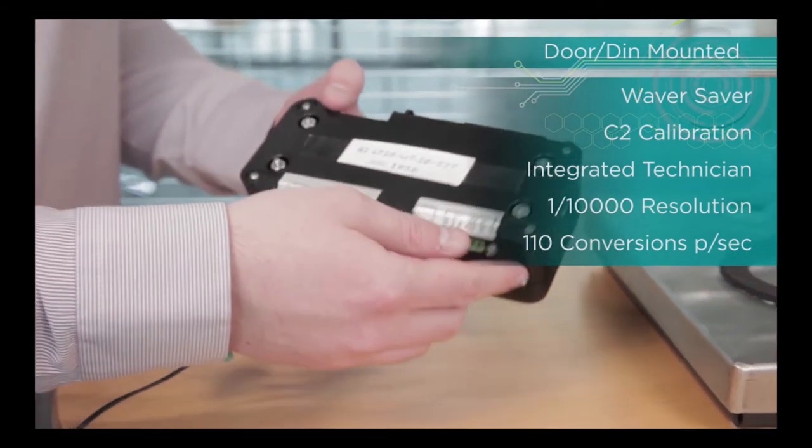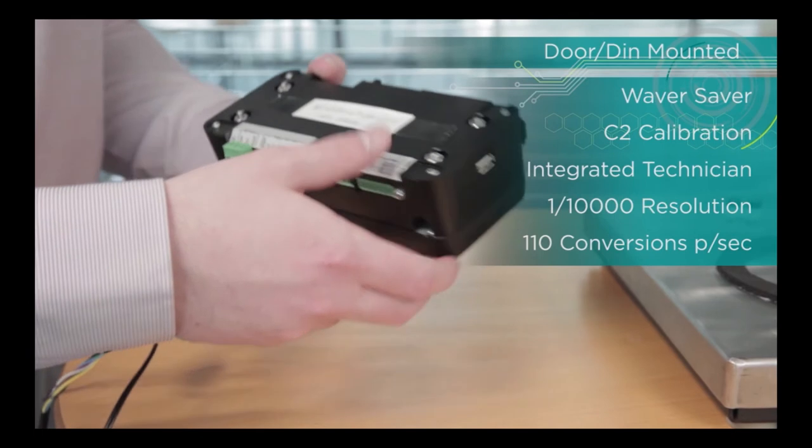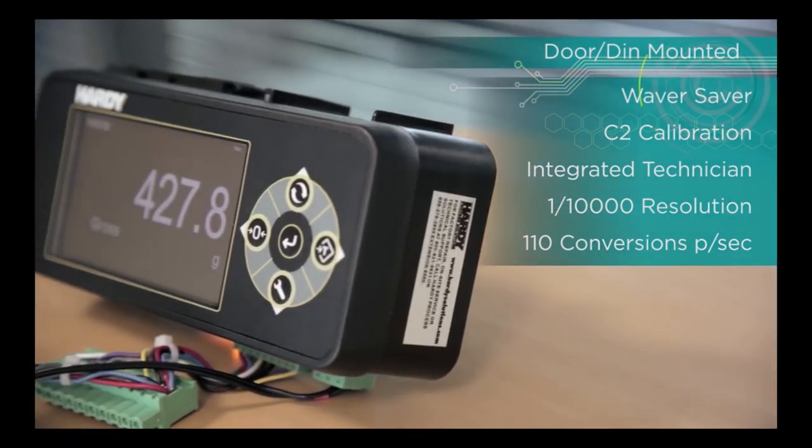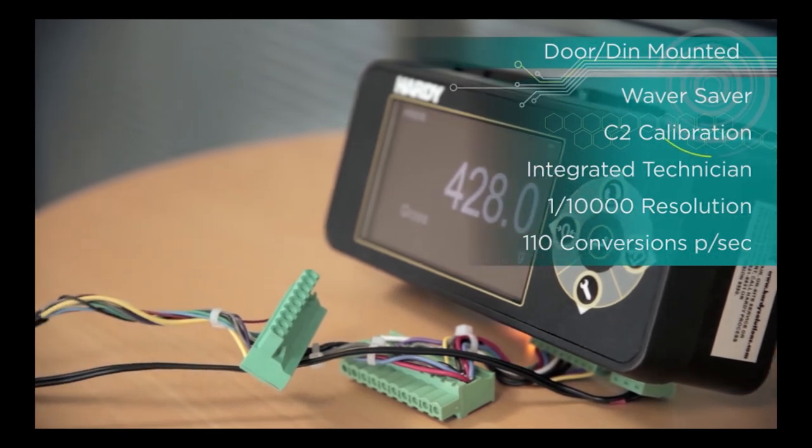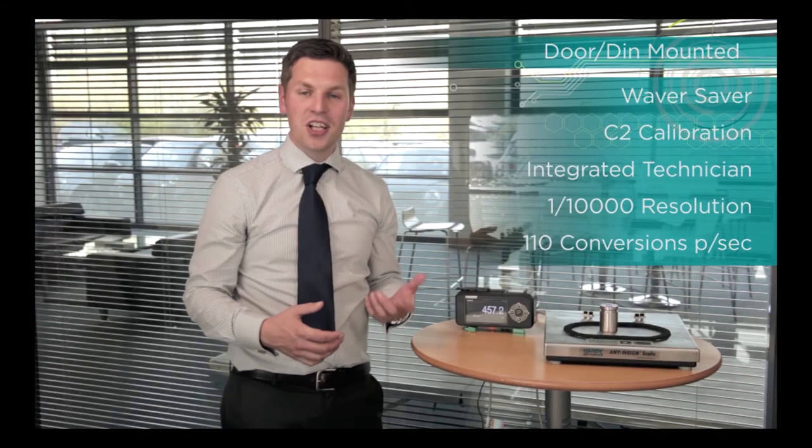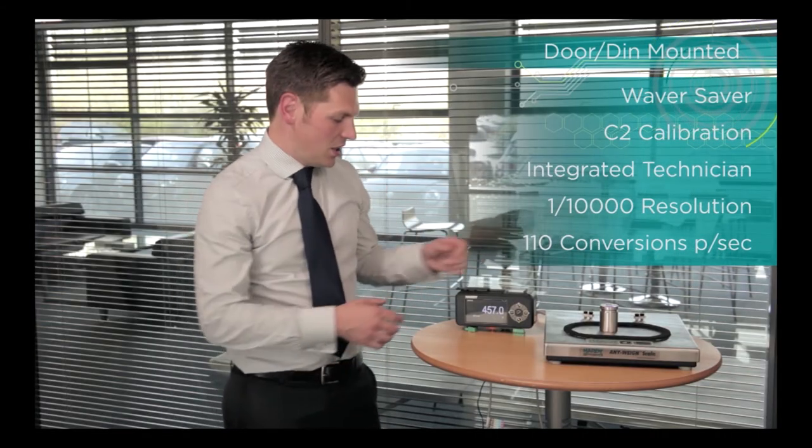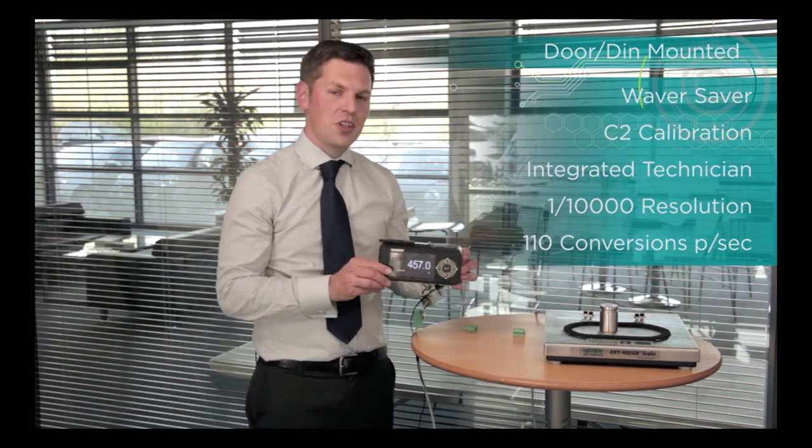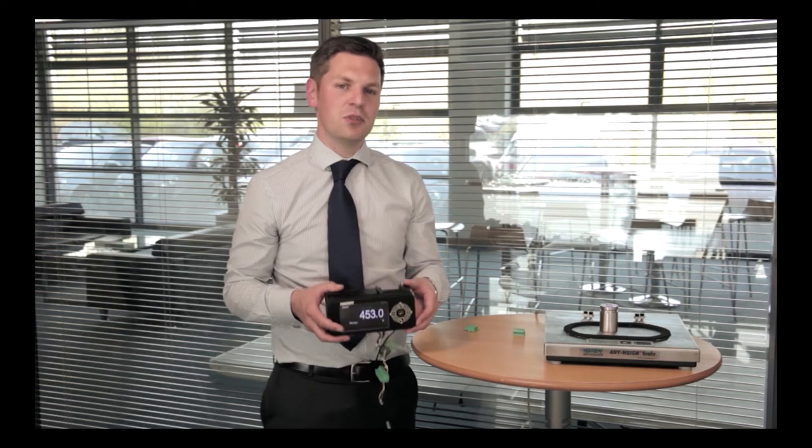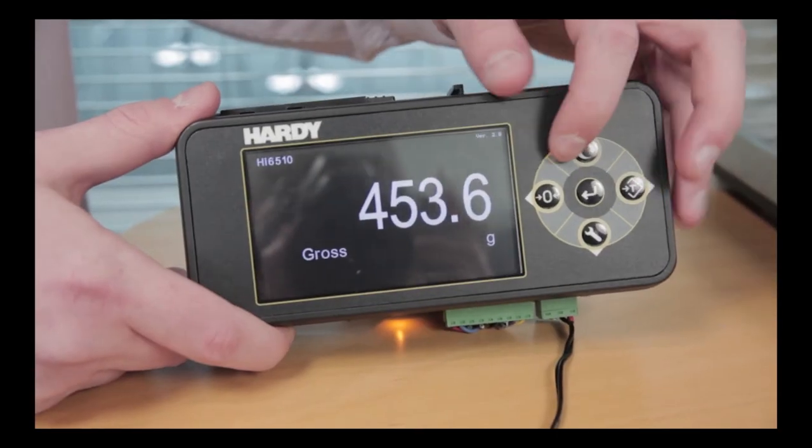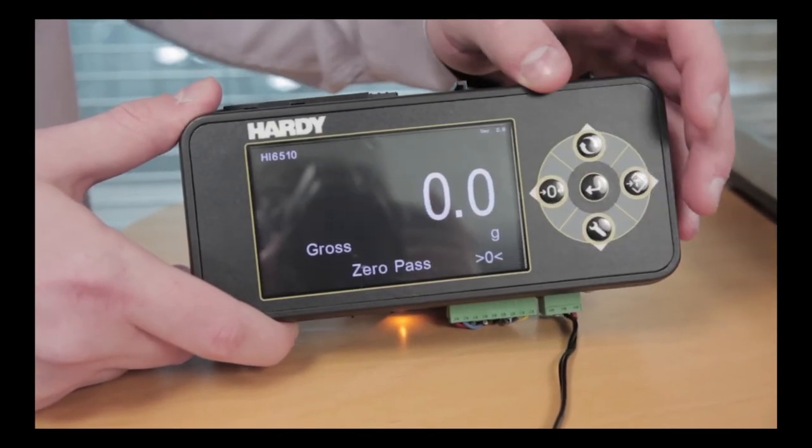This instrument has all of the Hardy goodies, things like waver saver, C2 calibration, integrated technician, they're all on board here. This one's resolution is 1 in 10,000, so that's quite good. It also does 110 conversions a second. As well as the 6500, there is a range called 6300 which is outwardly similar but doesn't have as many comms. That's slightly more cost effective if you don't need Ethernet.